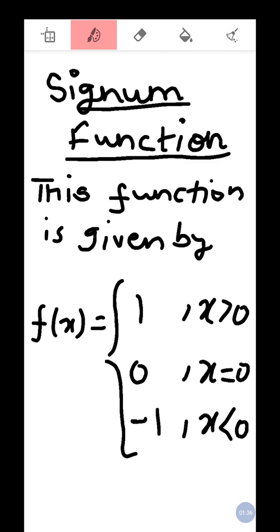So this is our signum function. If x is greater than 0, then the function equals 1. If x equals 0, then f(x) equals 0. And if x is less than 0, then the function will be equal to minus one. This is the signum function.